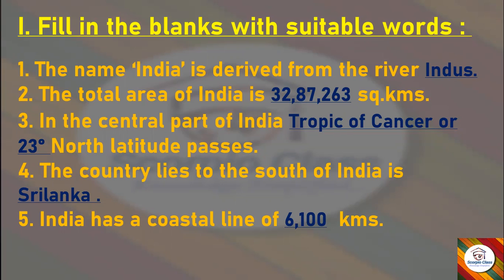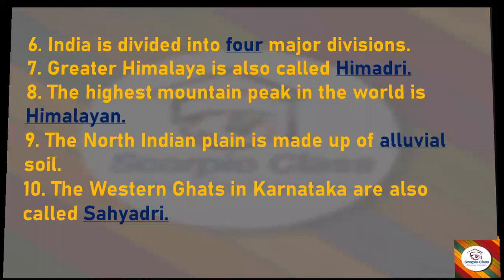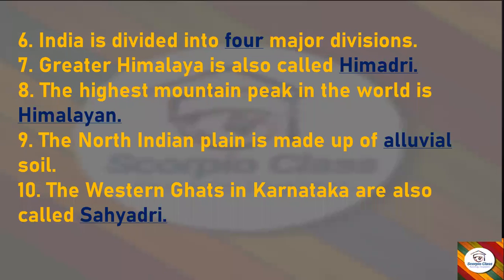Fourth: The country that lies to the south of India is — answer: Sri Lanka. Fifth: India has a coastline of — answer: 6,100 kilometers. Sixth: India is divided into — answer: four major divisions.